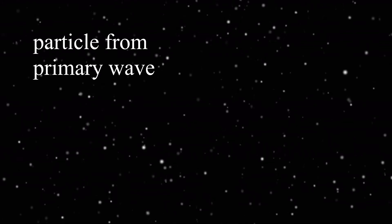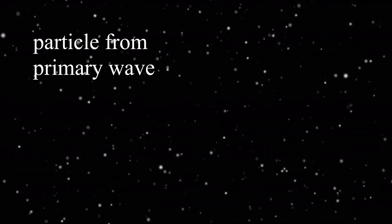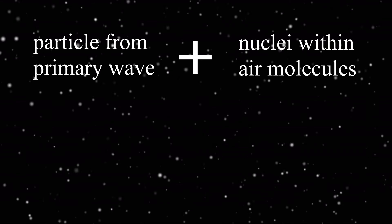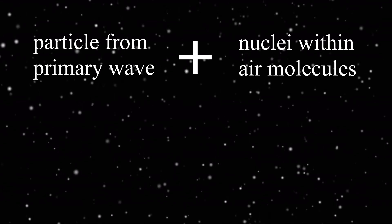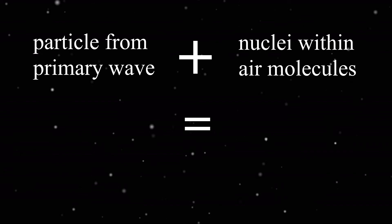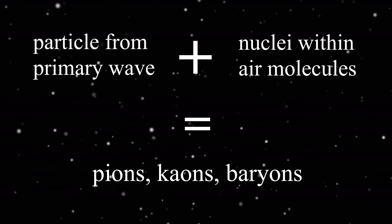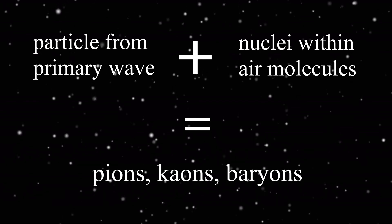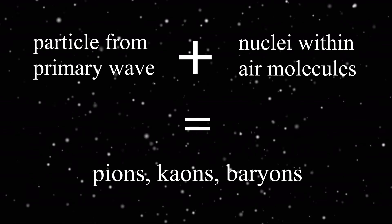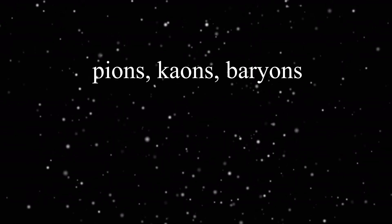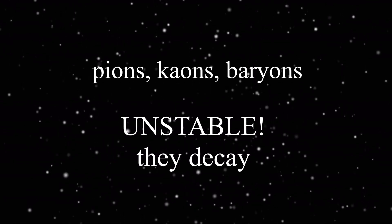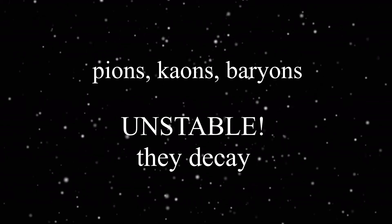When one of these particles from the primary wave comes into contact with a nucleus within air particles, it can produce high-energy hadrons, for example, pions, kaons, and baryons. These hadrons created from the first interaction are highly unstable and therefore quickly go on to decay to produce further particles and electromagnetic radiation.